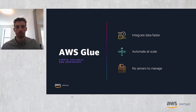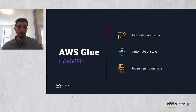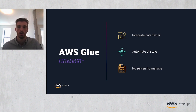AWS Glue is a serverless data integration service that makes it easy to prepare data for analytics, machine learning, and application development. Glue provides all of the capabilities needed for data integration, so you can gain insights and put your data to use in minutes instead of months. Traditional data integration is a complex and iterative process involving extracting data from various sources, enriching, cleaning, normalizing, and combining data, and loading and organizing data. Glue provides both visual and code-based interfaces to make data integration easy. Users can easily find and access data via the Glue data catalog. Data engineers and ETL developers can visually create, run, and monitor ETL workflows in AWS Glue Studio, while data analysts and data scientists can use AWS Glue DataBrew to visually enrich, clean, and normalize data without writing any code.